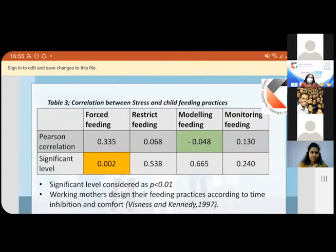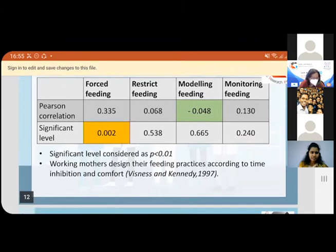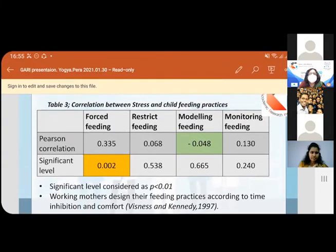Next, I'd like to move to the correlation between stress level and child feeding practices. Here you can see there is a positive correlation between forceful feeding and stress level. Literature previously said that mothers who are working and stressed tend to practice forceful feeding because they have to adhere to limited time, and it's comfortable to command them to eat rather than using other types of feeding attributes. I think that's why there's a positive correlation with stress and forceful feeding. I also found that modeling feeding has a negative correlation but not significant with the stress level. They have no time, so modeling feeding attributes were reduced.